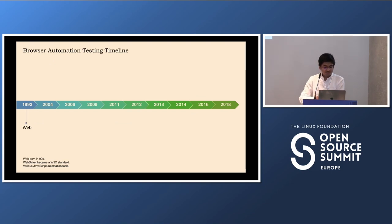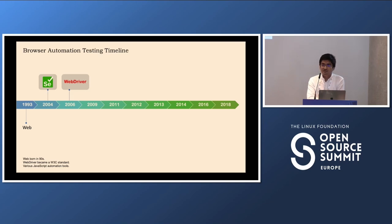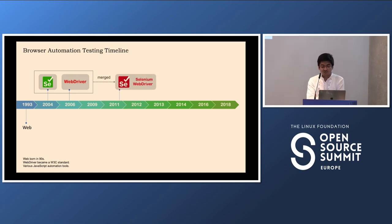The web came about in 1993, but it wasn't until 2004 that people thought about automation testing, and with that came the Selenium project. In 2006, a person named Simon Stewart came up with a different approach called WebDriver. These two projects merged in 2011 and it was called Selenium WebDriver, which due to its popularity was adopted in 2018 as a standard by the W3C — the World Wide Web Consortium — and came to be known as the WebDriver Classic protocol.